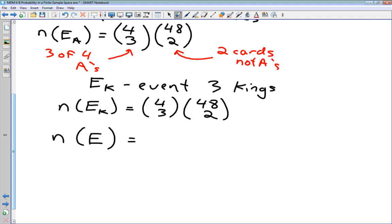it's going to be made up of a group of sub-events, all of which we can make up by doing four choose three, choose three cards that are the same, and 48 choose two, choosing the other two cards in our hand.